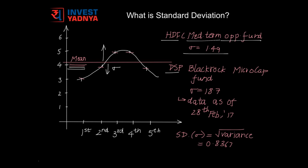Whereas DSP BlackRock Micro-Cap Fund, which is a small-cap equity fund, has a Standard Deviation of 18.7. The data has been taken as of 28th February 2017.